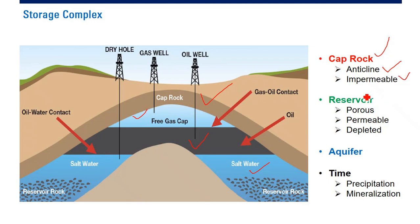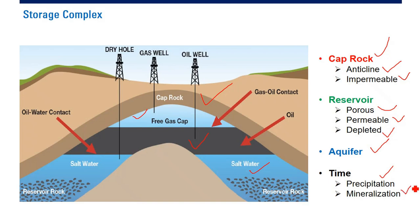And then we need a reservoir — a porous zone, yang berpori, a permeable zone. It is good if it is depleted — tekanannya sudah rendah, oil and gas already depleted — so that we can store more CO2. If the pressure is still high, it's difficult to inject. We also know most of the time we will have an aquifer or water zone. And we need time — kita butuh waktu yang lama — so that there will be precipitation and mineralization.